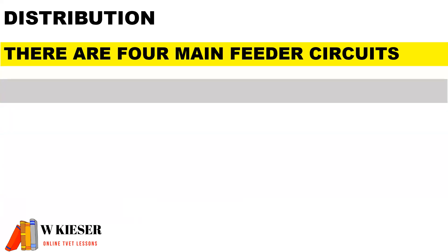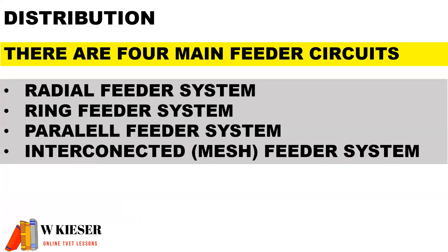A feeder circuit is an electrical power line that transfers electrical energy from the distribution substation to the distribution transformers. There are four main feeder circuits: the radial feeder system, ring feeder system, the parallel feeder system, and the interconnected, also known as the mesh feeder system.